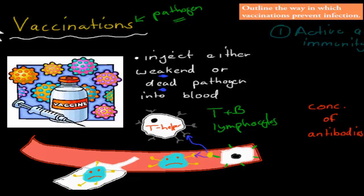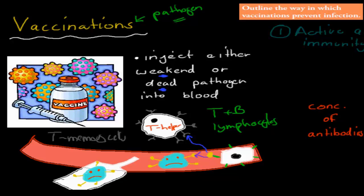Importantly, another type of T cell and B cell will also be produced — the memory cells, both T and B memory cells. We do all this to produce these memory cells, because memory cells will give us immunity for a long time. They will make sure that we won't get sick again. The memory cell will be specific for that virus.